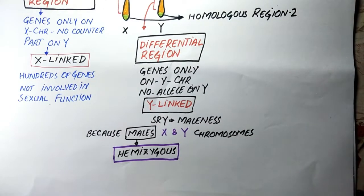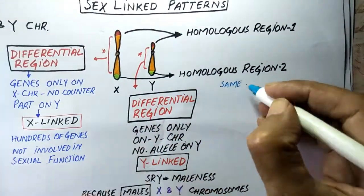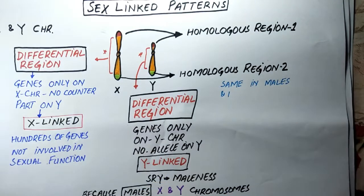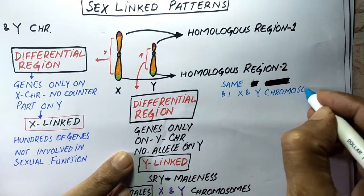Whereas females have two copies of the genes that are present on the X chromosomes. As far as homologous regions 1 and 2 are concerned, they are the same in X and Y chromosomes.